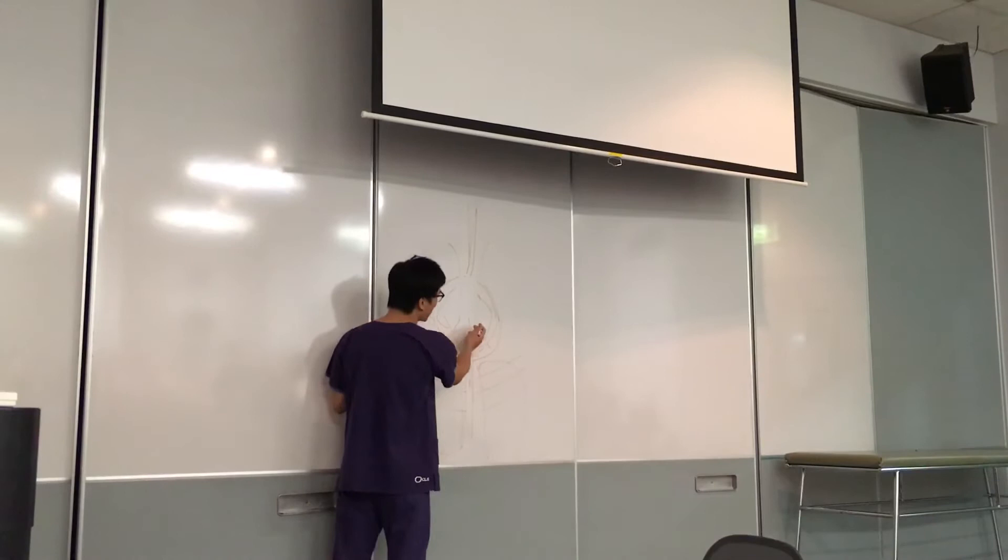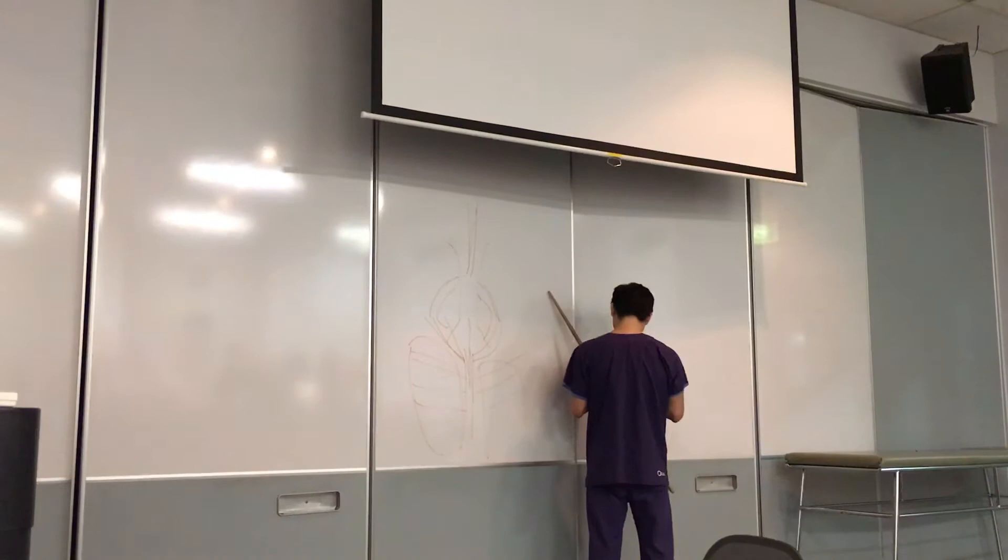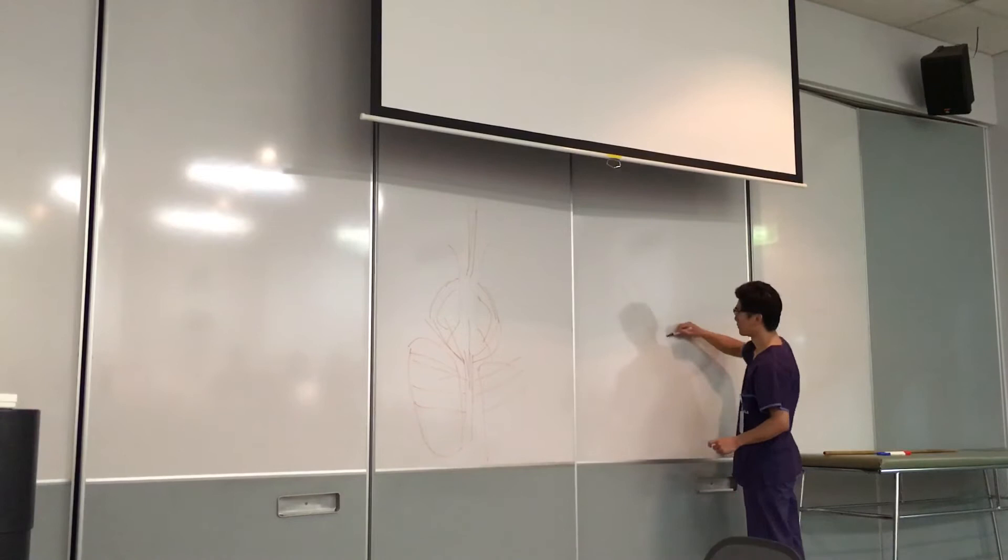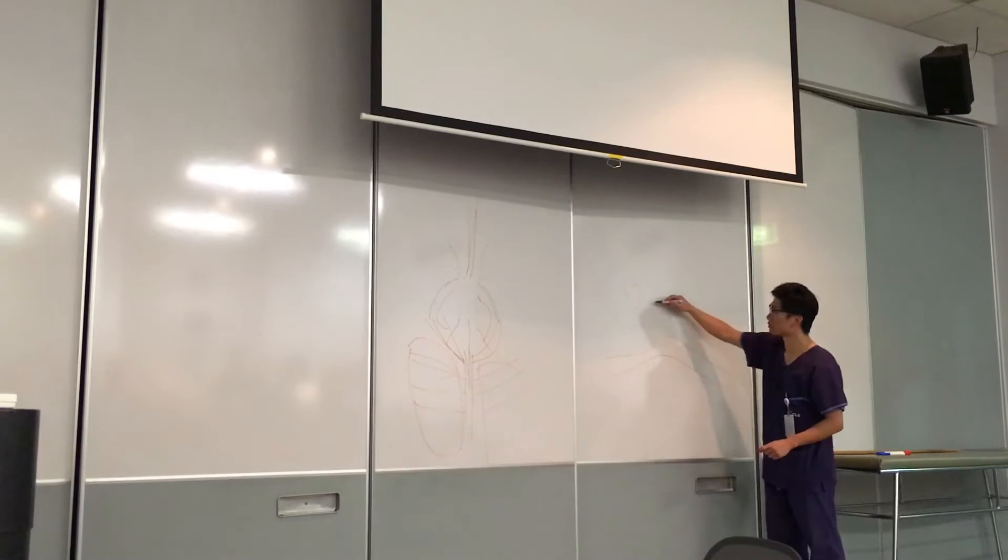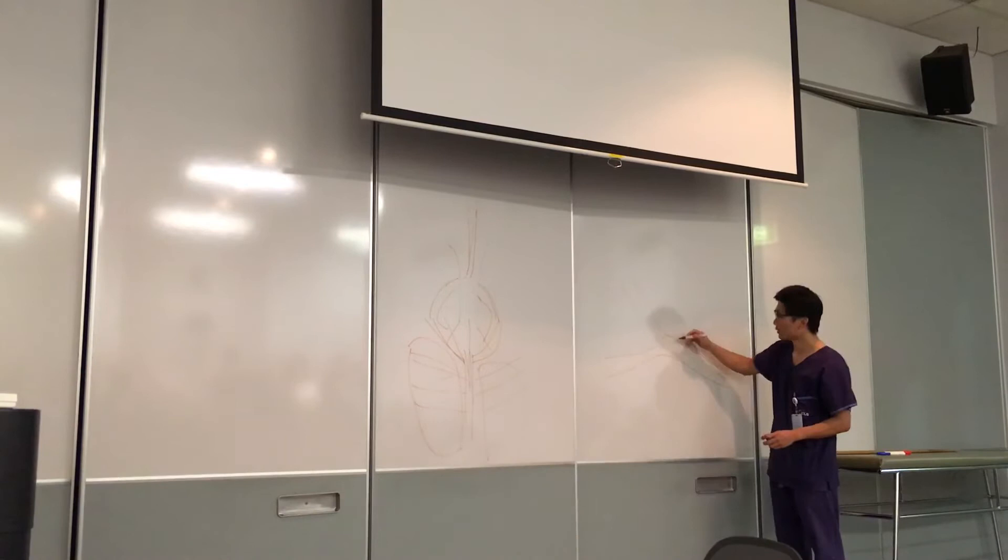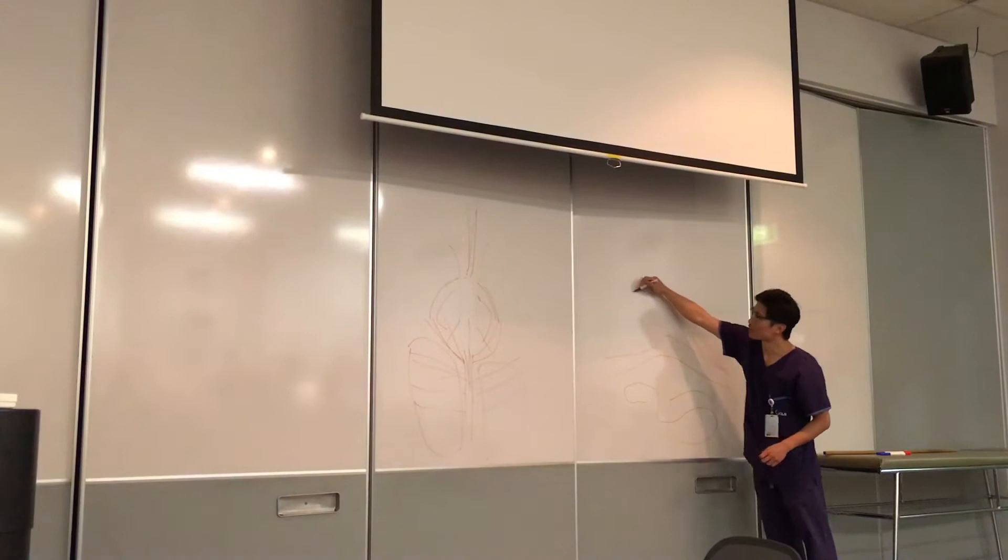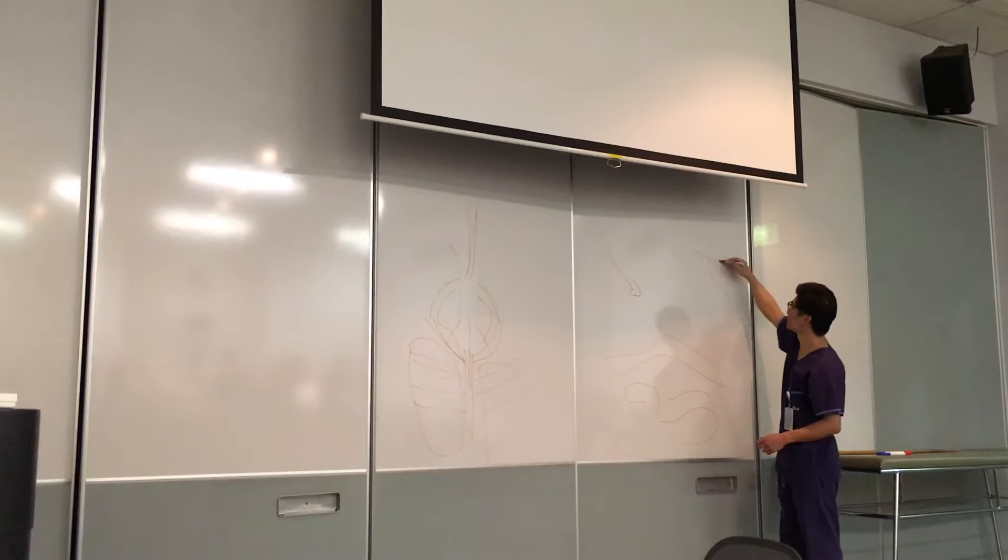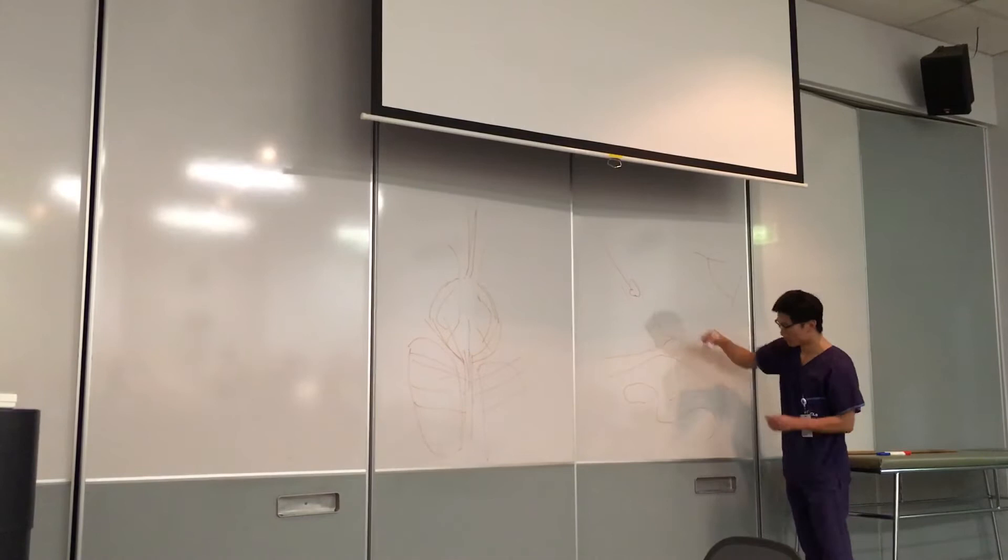Right, so once you've made the cut here, cross-sectionally. So that's the sagittal view of that. You've got a bowel underneath there, and that's your grasper holding up, and you are looking at this angle. This junction here, okay?